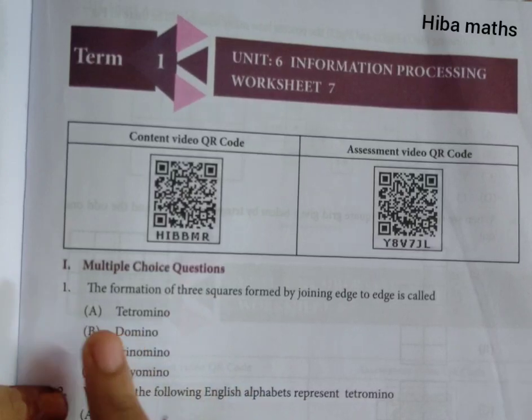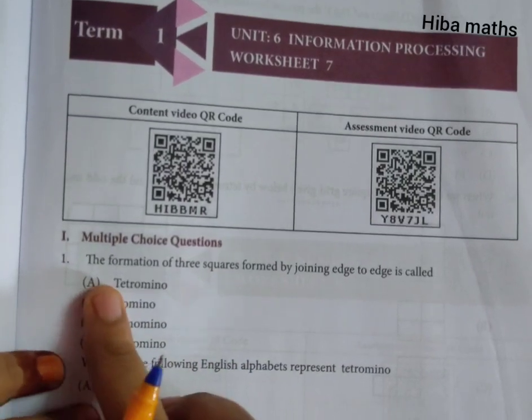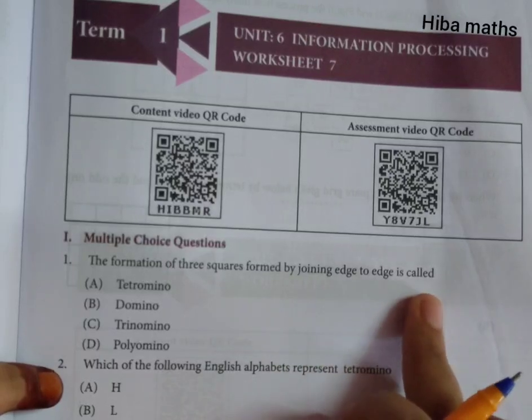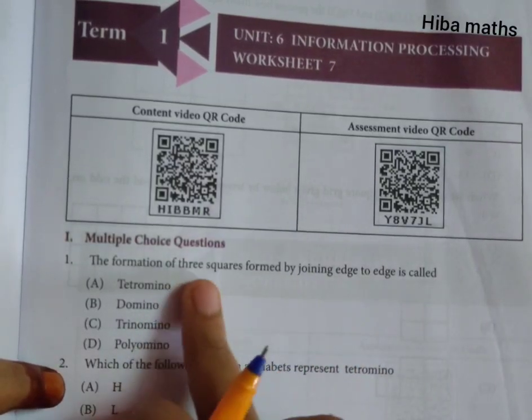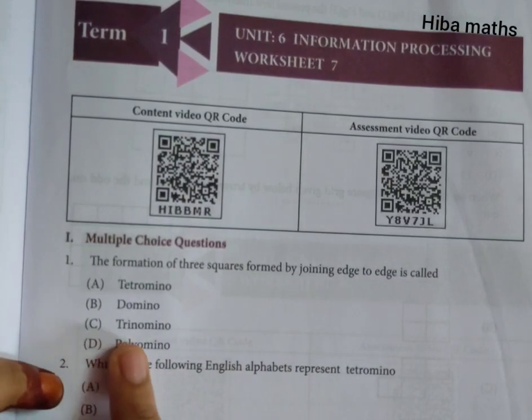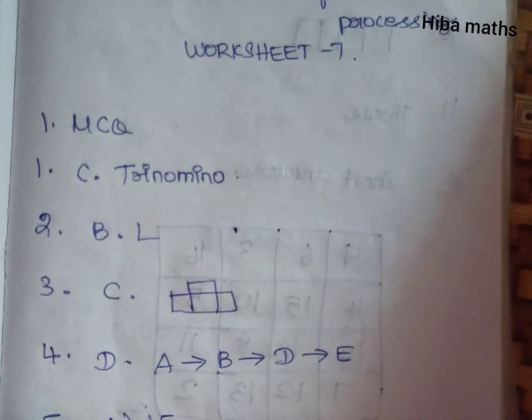So first one is multiple choice questions. First question, the formation of 3 squares formed by joining edge to edge is called. So how many squares? 3 squares. 3 is trinomino. So option C, trinomino.